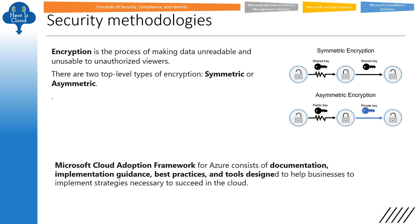On encryption — basic definition of encryption and what is symmetric versus asymmetric encryption, and the difference between them. For example, in which case do we use a public and private key? That is asymmetric encryption.